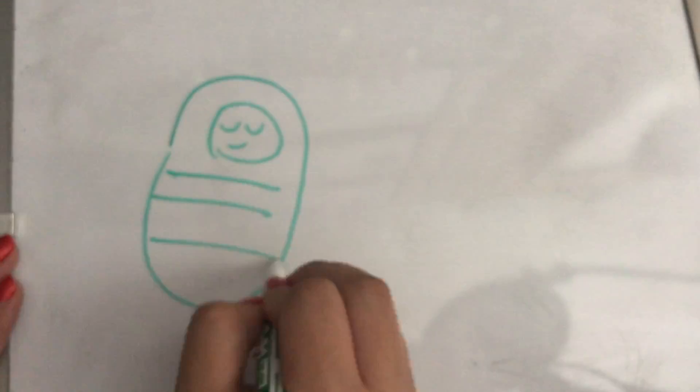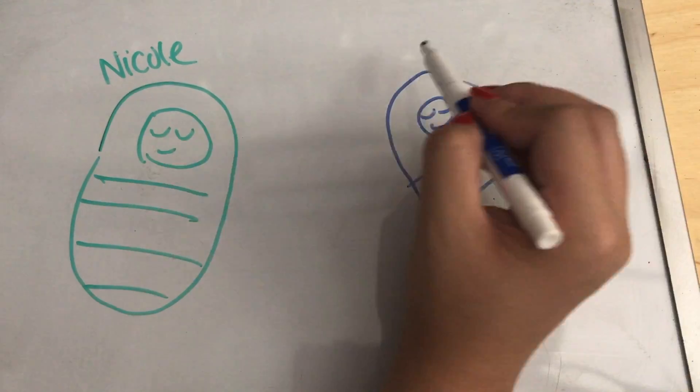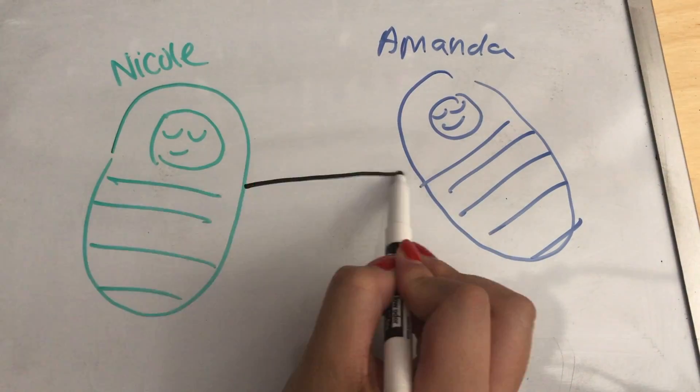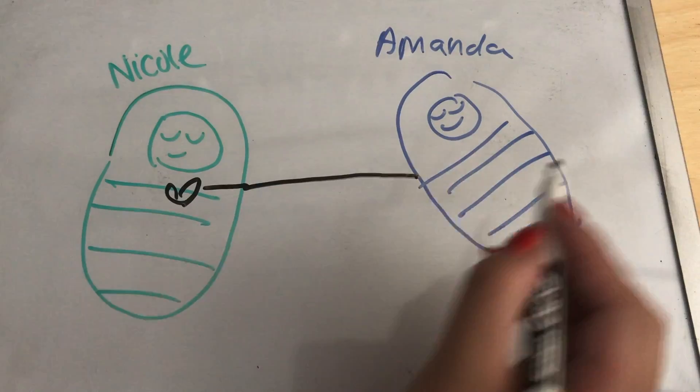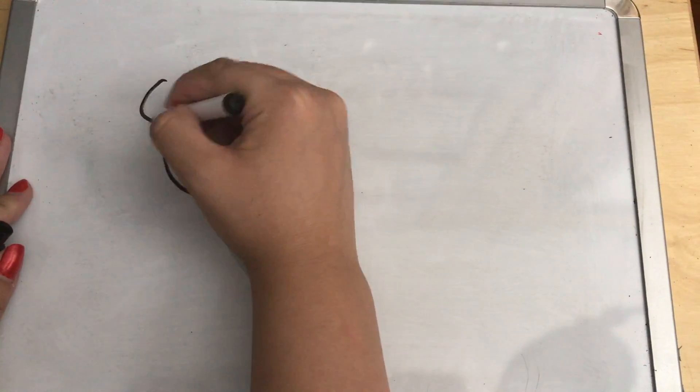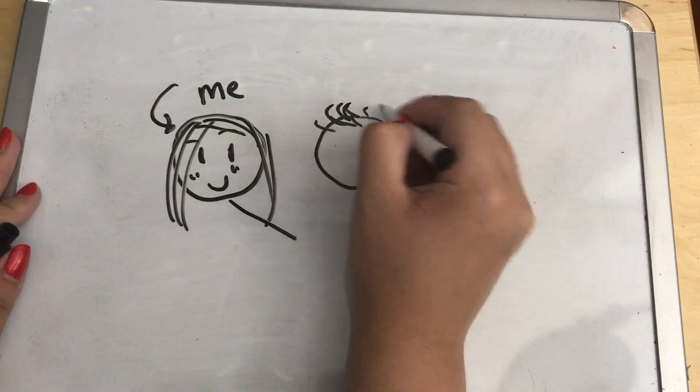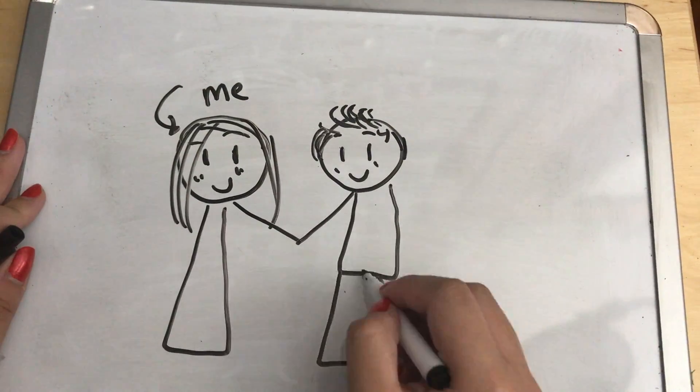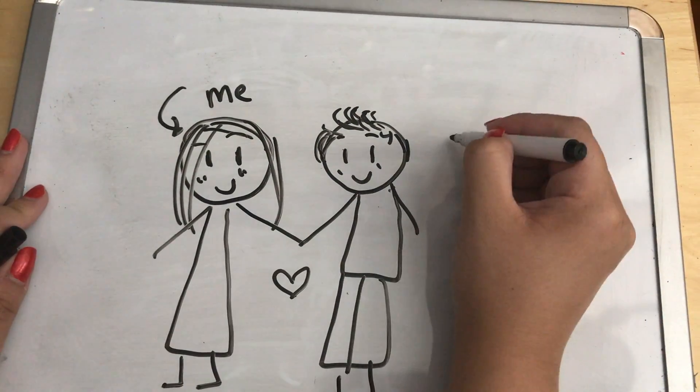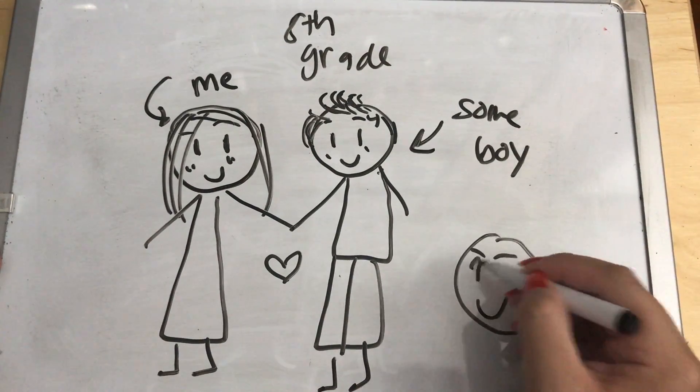This is gonna sound so corny to say but I believe that Amanda and I are soulmates in some way shape or form. There is definitely something that is tying me to Amanda. During the eighth grade I had my first experience with liking someone who actually liked me back, so it was very puppy love-ish. Inside joke because he looked like a small dog.